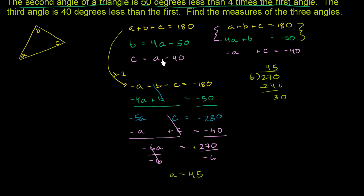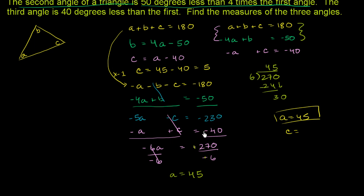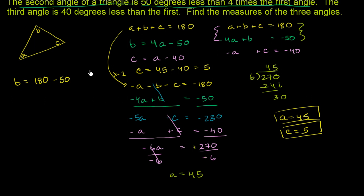Now we substitute back to solve for the others. C equals A minus 40 degrees, so C equals 45 minus 40, which equals 5 degrees. Then B equals 4A minus 50: 4 times 45 is 180, so B equals 180 minus 50, which equals 130 degrees.